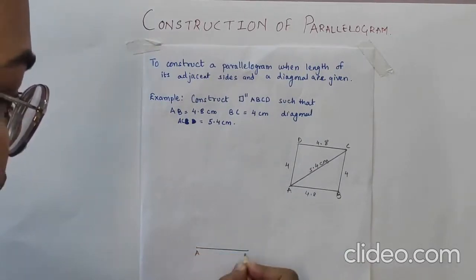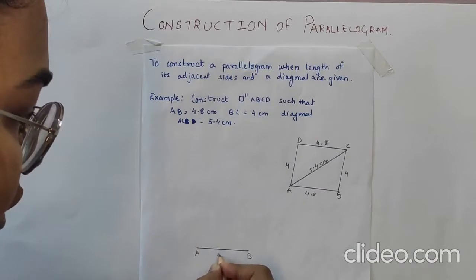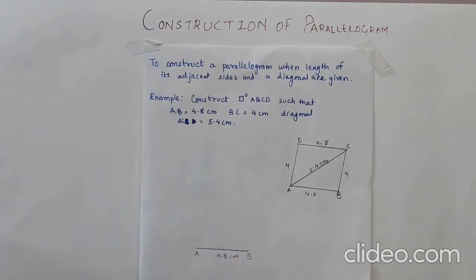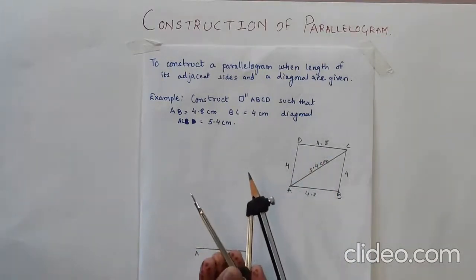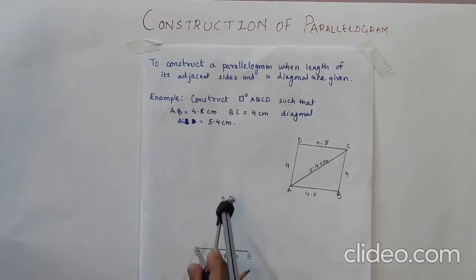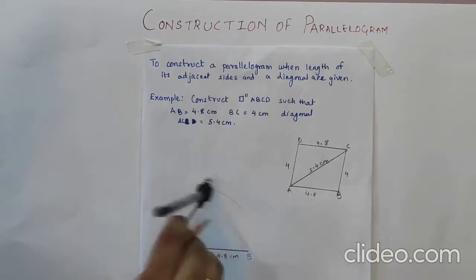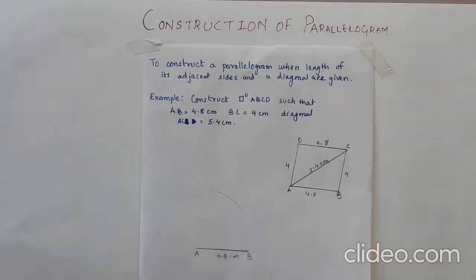Always name whatever you construct so that you don't forget the measurements. Next step is to draw an arc of 5.4. Here I have already measured it 5.4 cm. Keep the pointer on A and cut an arc of 5.4 cm.